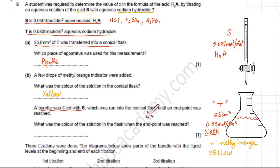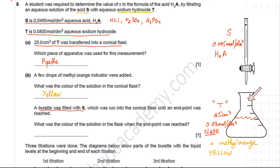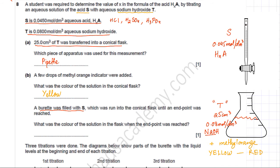The question asks what color the solution is in the flask when the endpoint is reached. When the solution is alkaline, methyl orange shows yellow. As acid is added from the burette, the NaOH gets used up. At the endpoint, all the NaOH is completely neutralized. If more acid is added, the solution becomes acidic, and methyl orange turns red. So the endpoint color is red.